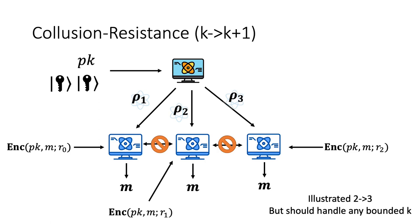For clarity, I will illustrate everything in this talk as two-to-three security, where we give out two quantum keys and the adversary — essentially all malicious users who each received a quantum key — come together to try to generate one additional copy. This adversary should not generate three keys that all work at decrypting when it is only given two. Notice that when we test the adversaries at decrypting, they should not communicate. Otherwise it would be easy for them to just copy the final classical answer from one adversary, which does not really indicate that the adversary has succeeded at copying, since we want all keys to be independently successful at decrypting.